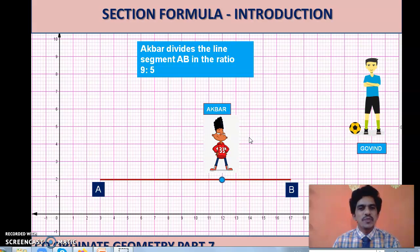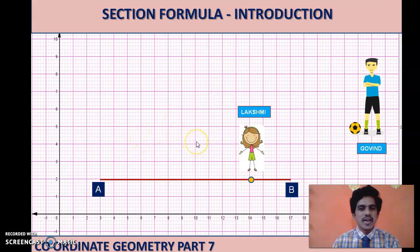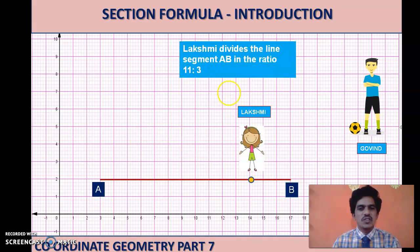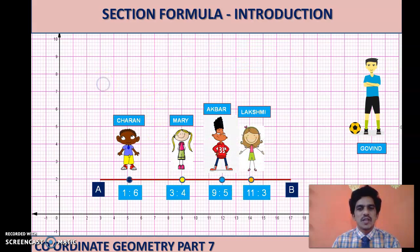The ratio is changing from one person to another. We are left with one more child — Lakshmi. Count the units to her right and left side; the ratio is 11 is to 3. Each child is dividing line segment AB in a different ratio because their positions are different. Section formula deals with these ratios — the word 'section' means 'part.' Writing all the ratios: 1 is to 6, 3 is to 4, 9 is to 5 and 11 is to 3.